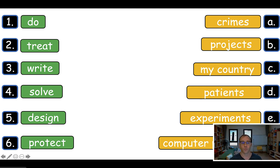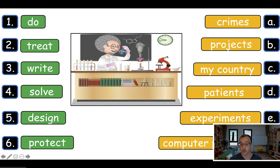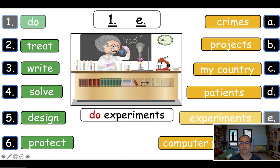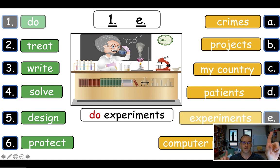Here's how the matching game works. You bring up one student from each team, give them a line on the board to write, and all they need to do is write a number and a letter. For example, if they see an image of 'do experiments,' they find where 'do' is — that's number one — and 'experiments' is E, so they write 1E. The first student to write the correct answer gets points. You could have them write the full word if you want, but I really just want them to see 'do experiments' as many times as possible. It's a speed game — who can recognize the picture and find the corresponding words on both sides.